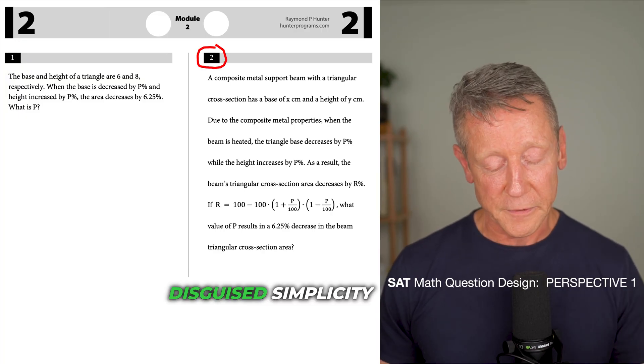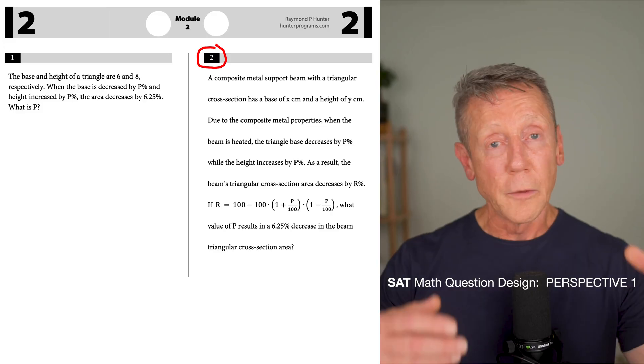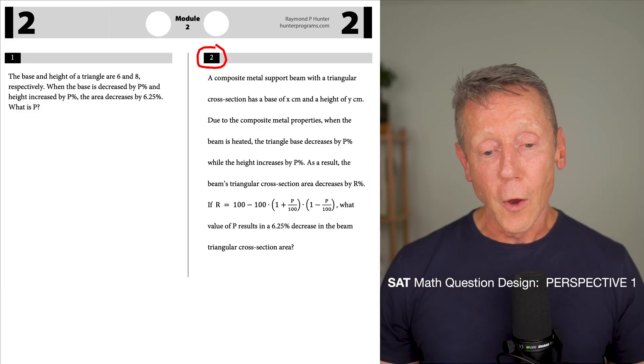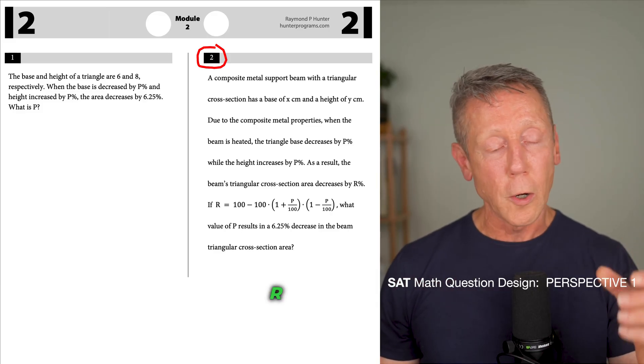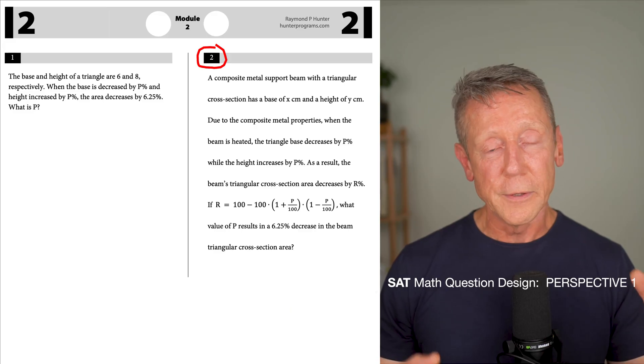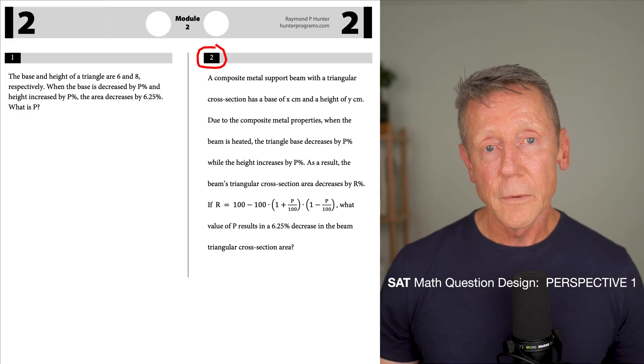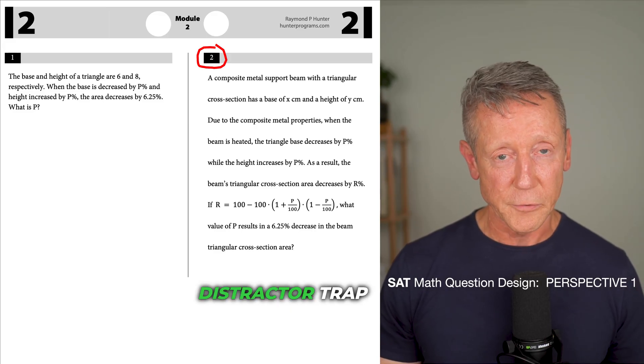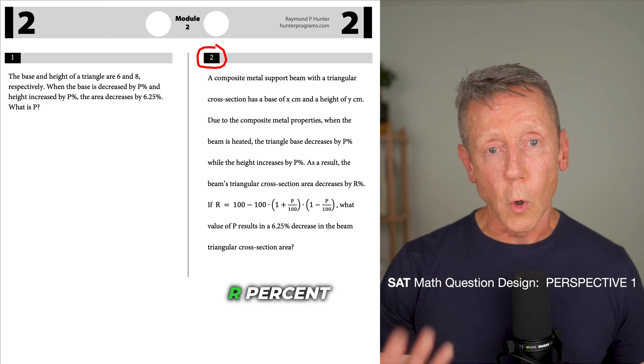Now let's look at the problem on the right. The first thing I notice is disguised simplicity. I mean, there's all that stuff. And in the end, all you needed was R and to use Desmos. Clearly, disguised simplicity. The second thing I notice about the problem is the distractor trap. They give you R percent, but in the equation, you need R.